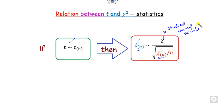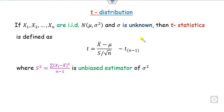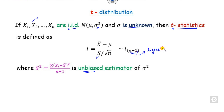Let us derive that. The T distribution is defined when you have some i.i.d. normal variables and the population variance sigma is unknown. We use the T statistic as defined here, where capital S is called the unbiased estimator and n minus 1 is called the degree of freedom. So with n i.i.d. variables, the degree of freedom is n minus 1 and S-squared is the unbiased estimator of the variance.